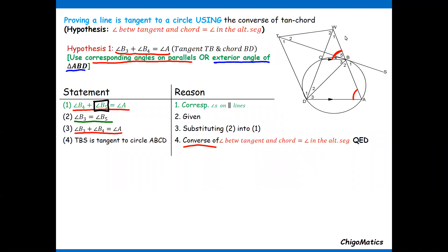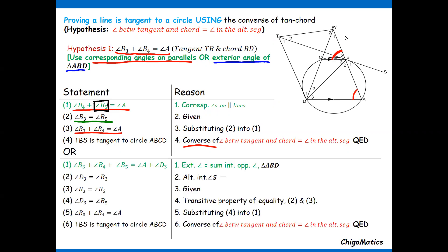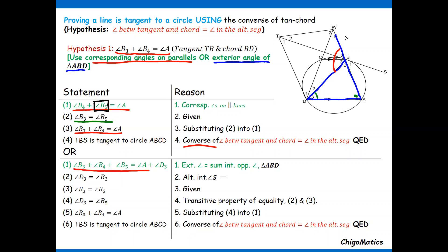Number two: I want to use the exterior angle of triangle ABD. The exterior angle of triangle ABD is this one — an exterior angle is formed by an extended side of the triangle. So the actual exterior angle becomes this one, and adding the two interior opposite angles includes B3 and B4. When I add these two interior angles, angle A is on the opposite side of the equal sign. This is what makes you choose those things because they involve what you want to show.